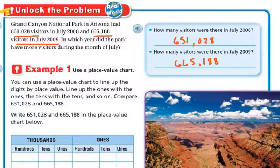So let's do example number one. Use the place value chart. You can use the place value chart to line up the digits by place value. Line up the ones with the ones and the tens with the tens and so on. Compare the two numbers. So let's do that right now.